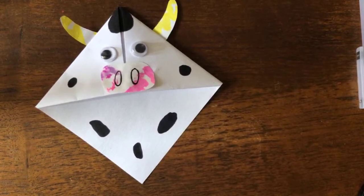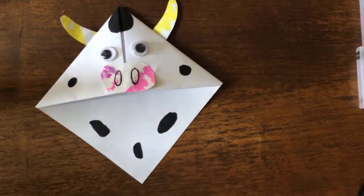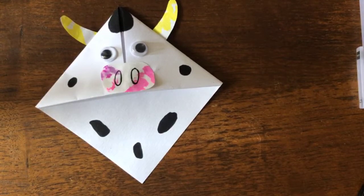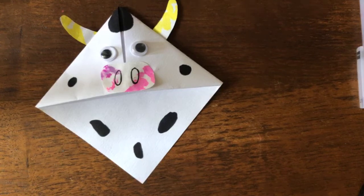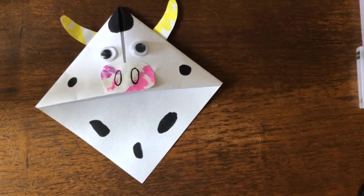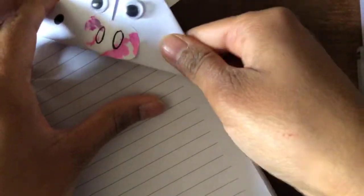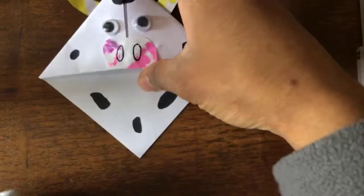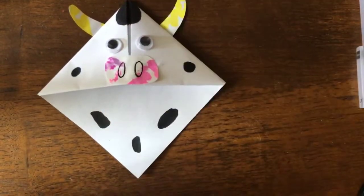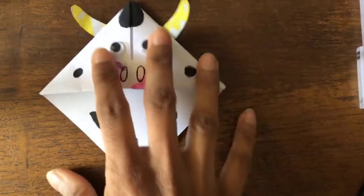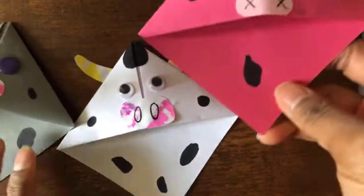So that's my origami corner bookmark. And when you're reading a book, then you can place it here in the corner. And then you can fold it. And next time you know where you have left off while you're reading your book. So these are the cow bookmarks.